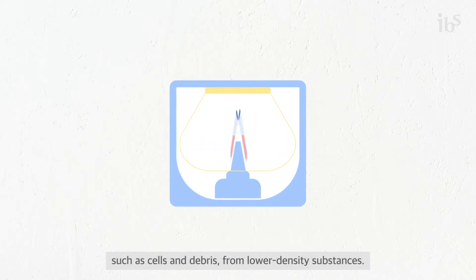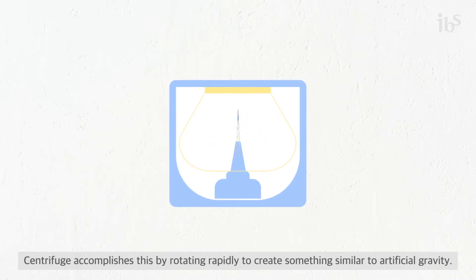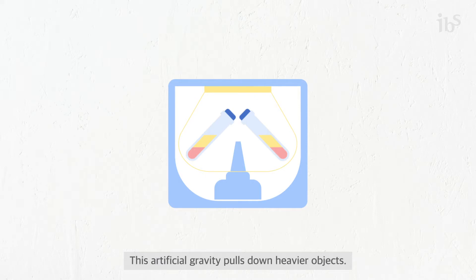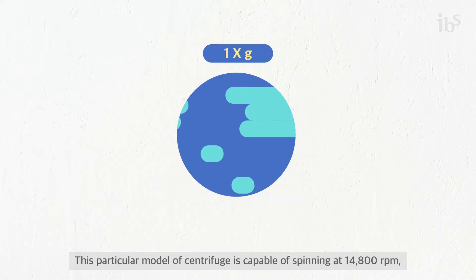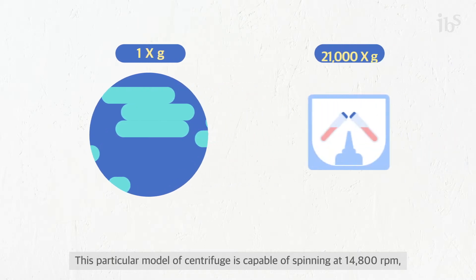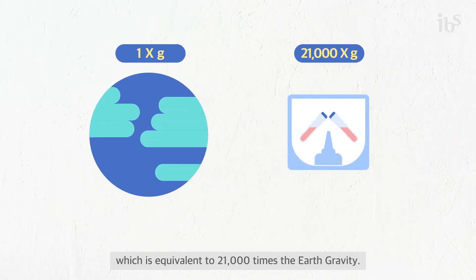A centrifuge accomplishes this by rotating rapidly to create something similar to artificial gravity. This artificial gravity pulls down heavier objects. This particular model of centrifuge is capable of spinning at 14,800 revolutions per minute.